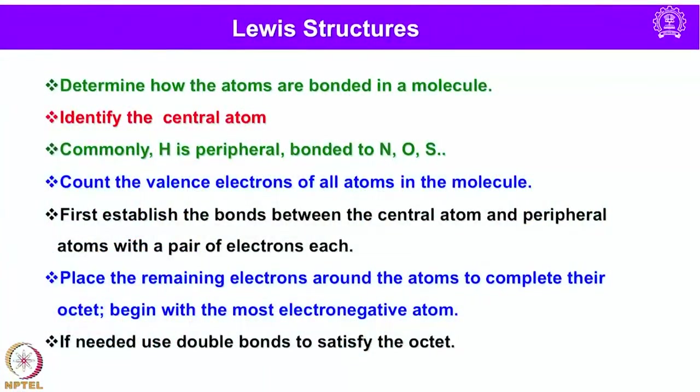We can use the group number of an element to indicate the number of valence electrons it contributes to the molecule. For example, oxygen is in group 16 and gives 6 electrons. To summarize the postulates: first determine how atoms are bonded and identify the central atom; hydrogen is always peripheral; count the valence electrons; establish bonds between the central and peripheral atoms with a pair of electrons each; place remaining electrons around atoms to complete their octet, beginning with the most electronegative atom; and if needed, use double bonds to satisfy the octet.